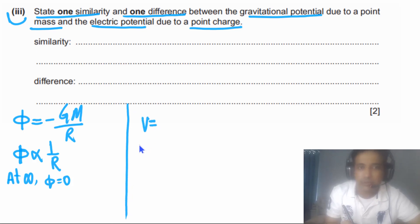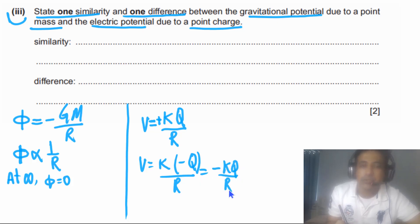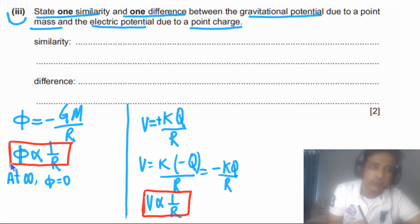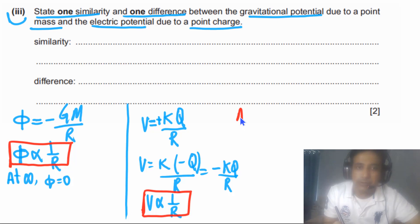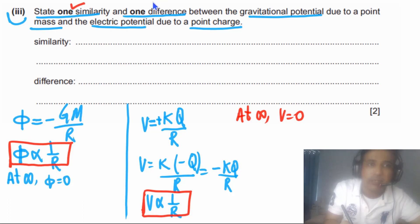Electric potential equals kQ/r. If Q is positive, the potential is positive; if Q is negative, the potential is negative. So electric potential can be positive or negative, while gravitational potential is always negative. Both potentials are inversely proportional to r, and both are zero at infinity.